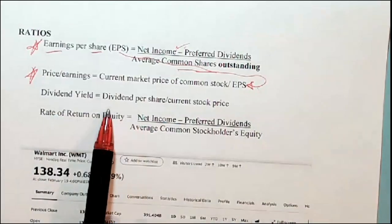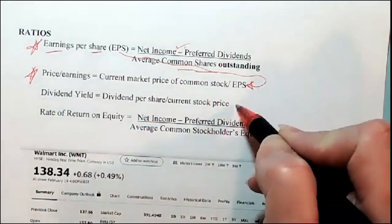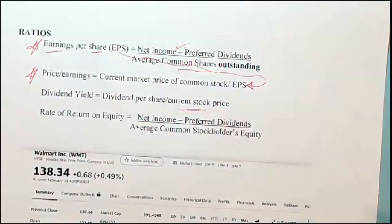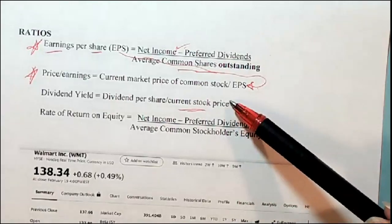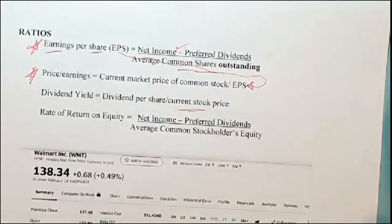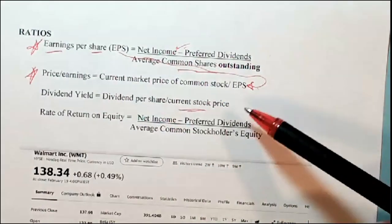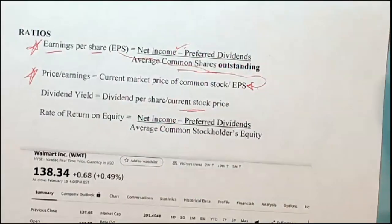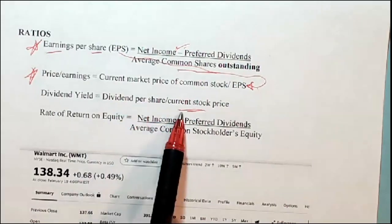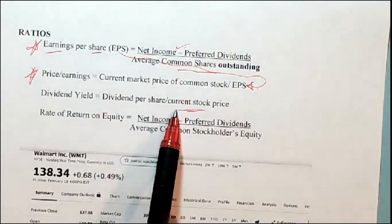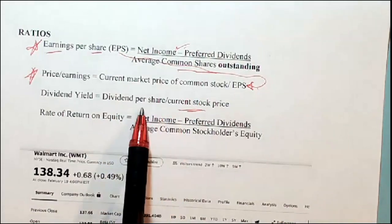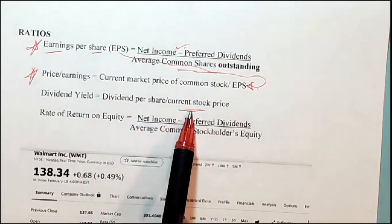Dividend yield is the dividend paid divided by the current stock price — that's not on your financial statements. For example, if I want to buy AT&T at $30 and it's paying a $3 dividend, that's a 10% dividend yield, which is better than what you can get at any regular bank. So if you're interested in dividends, this tells you the effective interest rate you're getting in terms of a dividend based on what you paid today.